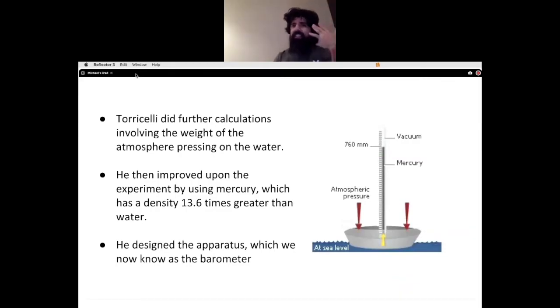Torricelli decided to use something else other than water, and he eventually used mercury. The reason why he used mercury was because mercury had a density that was 13.6 times greater than that of water. He created this apparatus that we now know as a barometer. He's got mercury in this beaker, and the atmosphere is exerting a pressure on the mercury, forcing it to go up this tube.